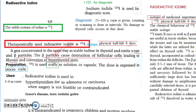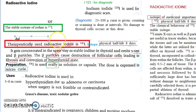Now, iodine's stable isotope is 127. Less than that — iodine 123 — you can use for diagnosis of thyroid problems. But as an antithyroid agent, you will use iodine 131.